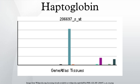A decrease in haptoglobin can support a diagnosis of hemolytic anemia, especially when correlated with a decreased red blood cell count, hemoglobin, and hematocrit, and also an increased reticulocyte count. If the reticulocyte count is increased but the haptoglobin level is normal, this may indicate that cellular destruction is occurring in the spleen and liver, which may indicate a drug-induced hemolysis or a red cell dysplasia.